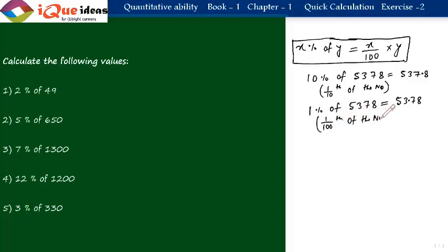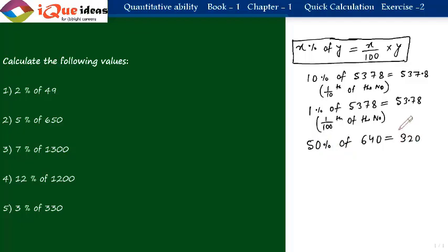Suppose we have to find 50 percent of 640. 50 percent means half. So we can straight away say it is half of 640, which is 320. This kind of calculation should be done mentally. So 50 percent means half of the number — these are all basic shortcuts.